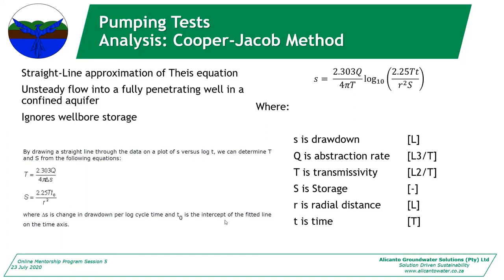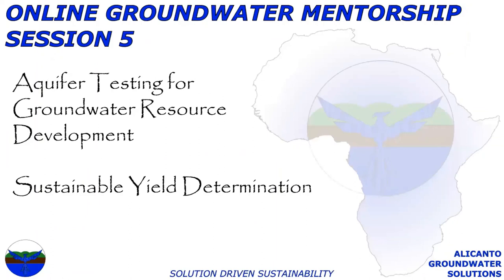Is everybody comfortable with Cooper-Jacob? Great. The R-squared in the storage equation is ideally the distance between your pumping borehole and observation borehole, otherwise it's just an approximation. T0 is the intercept of your line on the time axis in your storage equation. I'm going to stop here tonight — I'll make a separate video this weekend covering the type curve fitting and curve analysis in detail. Thank you all for joining.